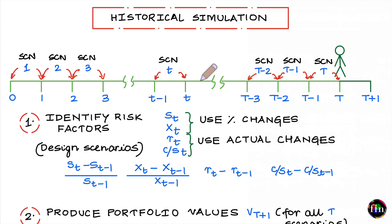Depending on the model you have devised for estimating VaR, your chosen random variable of interest can be the future value of your portfolio, the profit/loss you would realize over an upcoming period of time, or the return of your portfolio over an upcoming period of time. Irrespective of the random variable you intend to work with, a non-parametric approach will not impose any distribution-related assumption on your random variable.